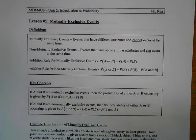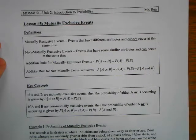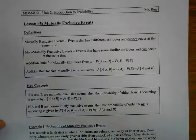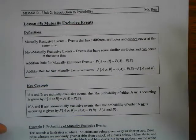Hey everybody, it's Mr. Ray here, continuing on with our data management course. We're in Unit 2 now and we're looking at different ways to calculate probability in different circumstances. In the previous lesson, Lesson 4, we looked at whether two events were independent of each other or one depended on the other happening, and we used that relationship when we wanted to find the probability of both events happening — the probability of A and B.